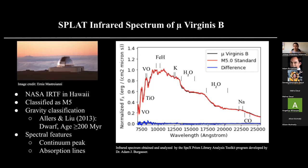Here we can also see the different absorption lines of different molecules that may be present in Mu Virginis B. Its gravity classification, according to Allers and Liu's 2013 paper, was classified as a dwarf, meaning Mu Virginis B's age has to be at least 200 million years old.